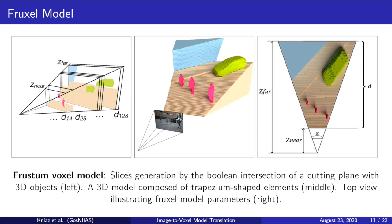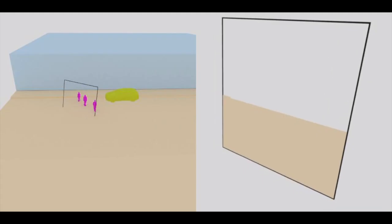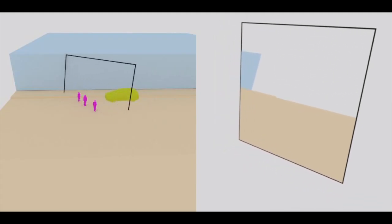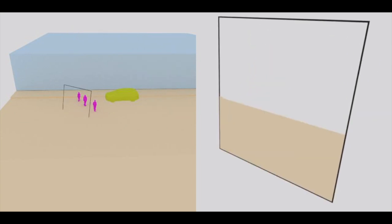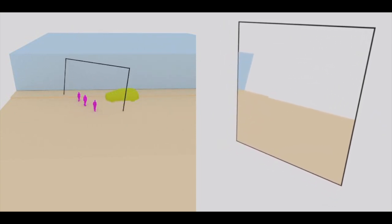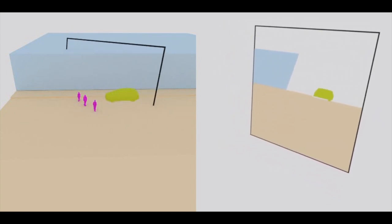The semantic fraxel model is a 3D tensor in which each element contains the index of the class of an object located in the given fraxel. The fraxel model can be regarded as a multi-layer 3D semantic segmentation. Each slice is a boolean intersection of an object and a thin box orthogonal to the camera optical axis located at a given distance.